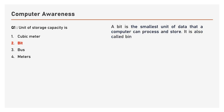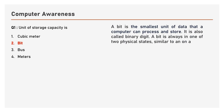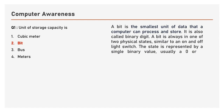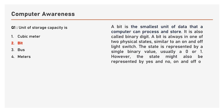A bit is also called a binary digit. A bit is always in one of two physical states, similar to an on and off light switch. The state is represented by a single binary value, usually a 0 or 1. However, the state might also be represented by yes and no, on and off, or true and false.